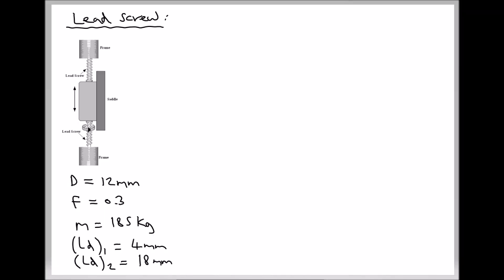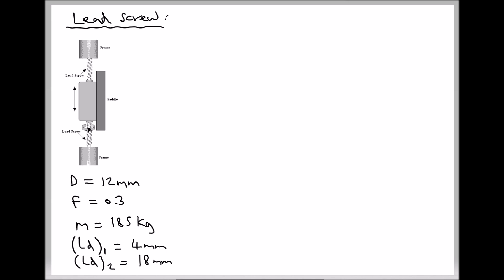In this video we're going to be discussing a type of lifting machine known as a lead screw. On the left hand side we have a diagram of the lead screw. The way the machine works is that the saddle would be attached to a mass, and as the saddle raises and lowers the mass could be lifted and lowered. Built into the mechanism we would have a motor, and the motor would drive the lead screw forwards to lift the load and backwards to lower the load.